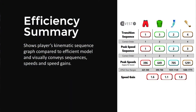The efficiency summary is a great tool to help players see where they are once they understand how transition sequence and peak speed sequence changes from full swing to short game. Unlike full swing with a driver, in short game we're not trying to maximize speed gains — we're trying to control our speed gains to control shot distance.